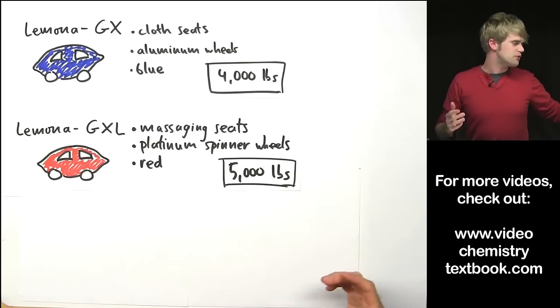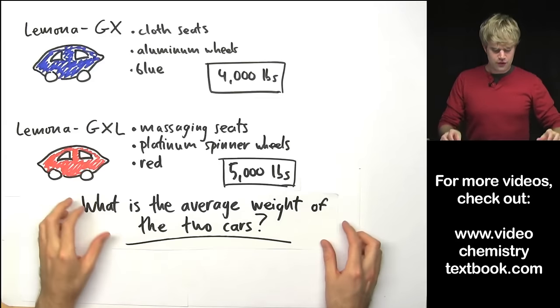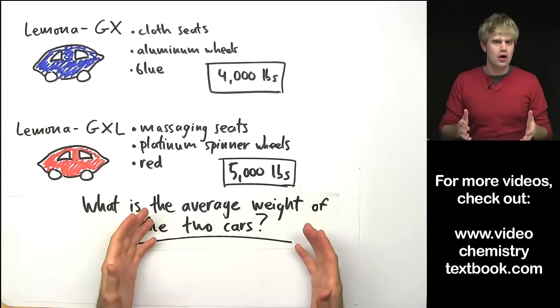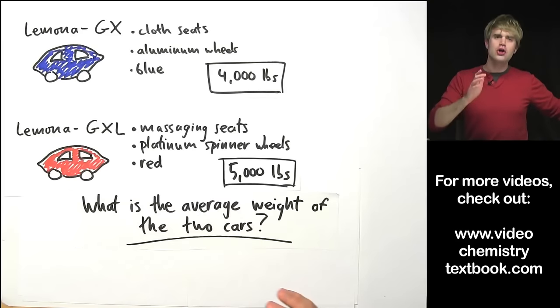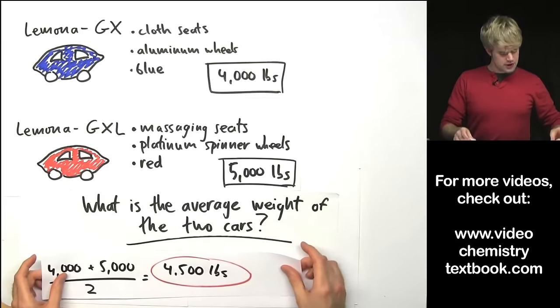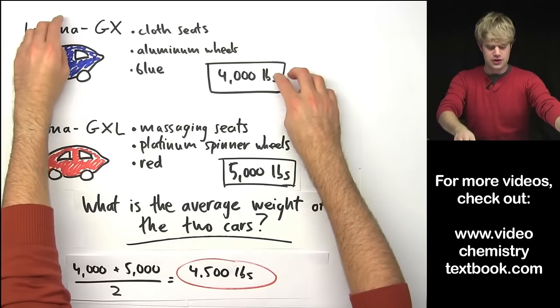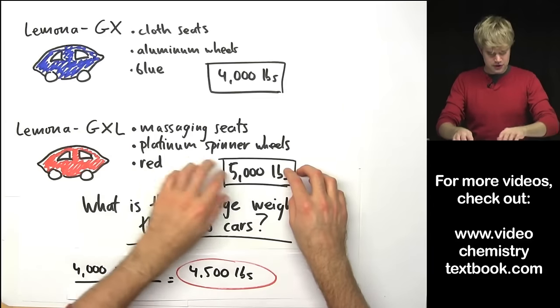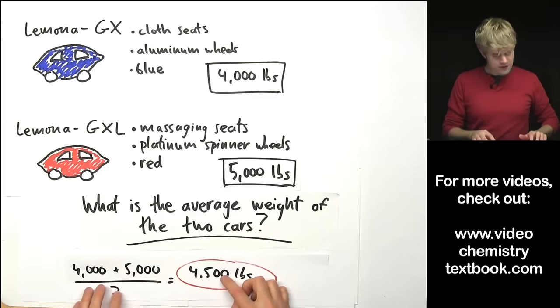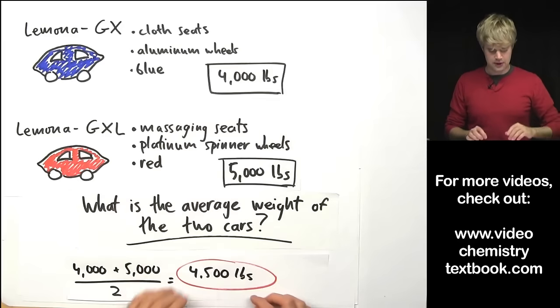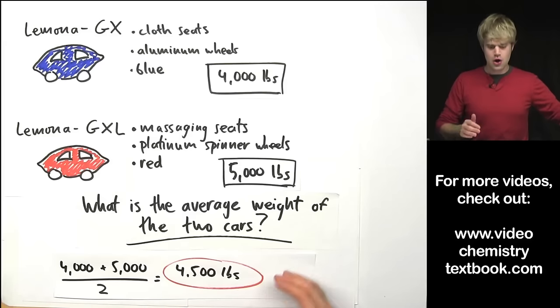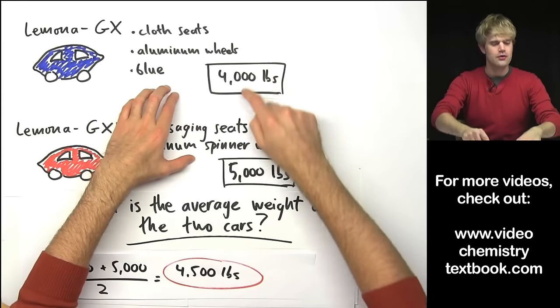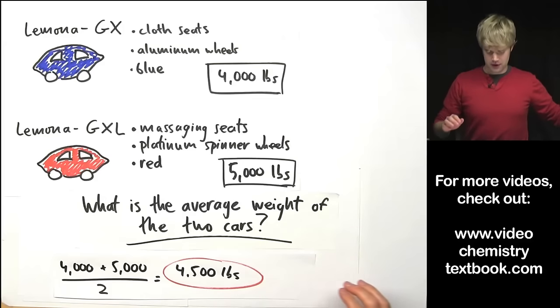So let's say you have this question. What is the average weight of the two cars? Knowing what you probably already know about averages you could do this math. You could take 4,000 pounds for the GX, add it to 5,000 pounds for the GXL and then divide by two because we have two things here. That would give you an average of 4,500 pounds which gives us a number that is right between the weights of the two models.